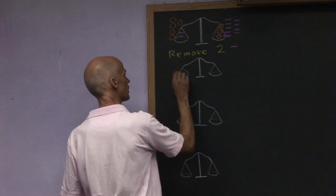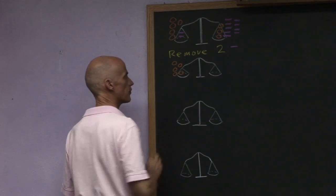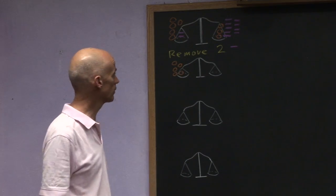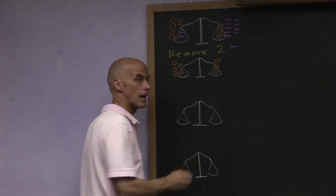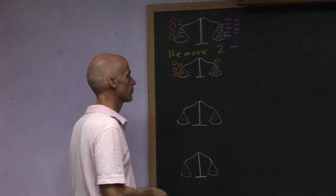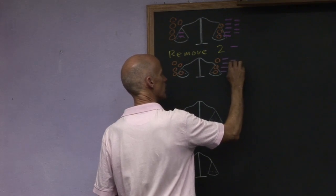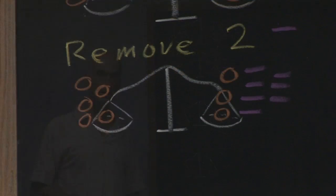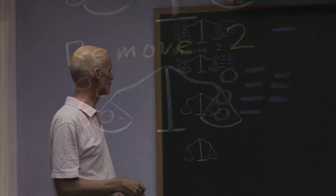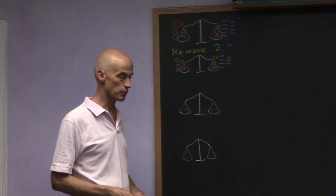So by removing two hex nuts from each side, we then had five sacks left on one side, on the other side we still have three sacks and seven hex nuts left. So the next step was to remove three sacks from each side.